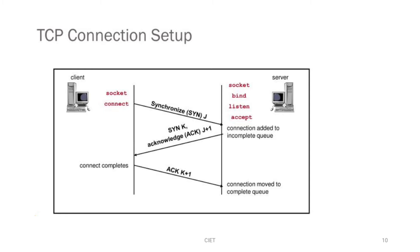There is a client and server which are on two different hosts. At the server side, socket creation is done, then the bind function — which puts TCP in the close state — then listen function puts TCP in the listen state. For the accept function at the server side, it is in passive open, meaning the server will not initiate any connection but will wait for one.